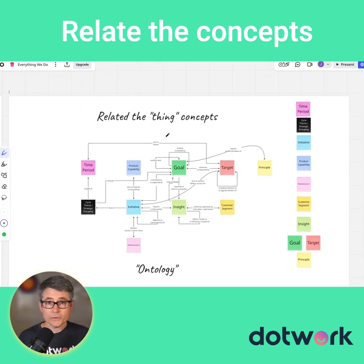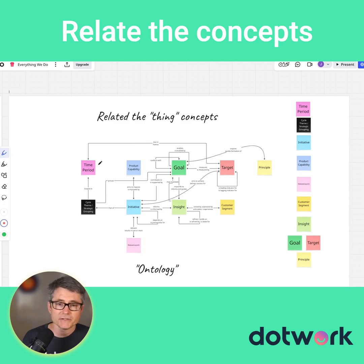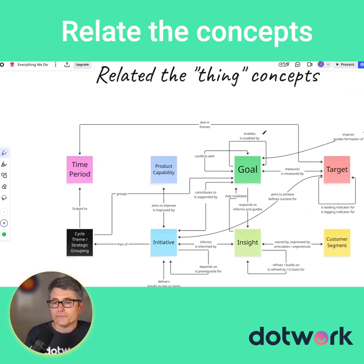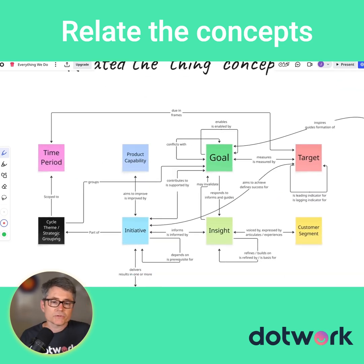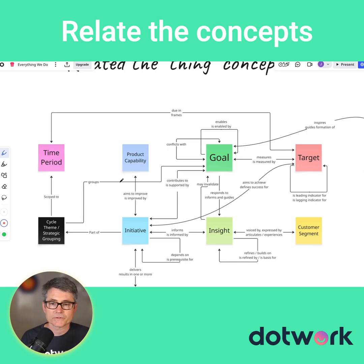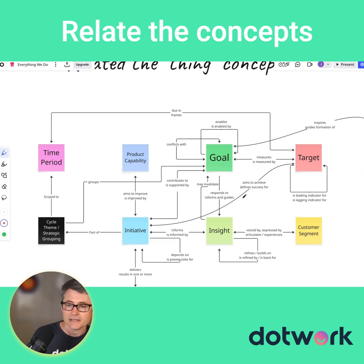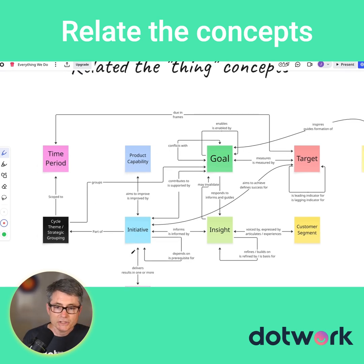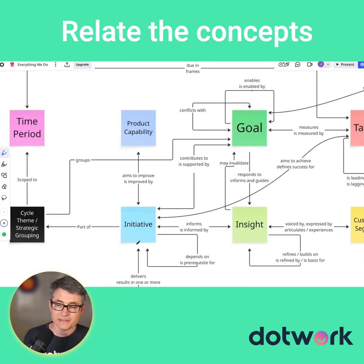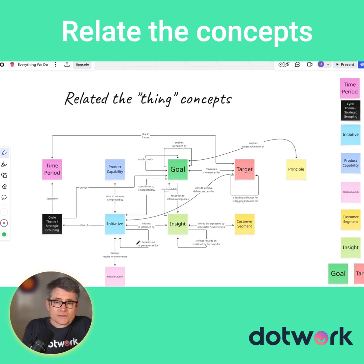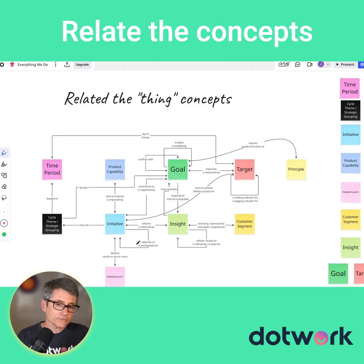Finally, we take that and think about how those concepts are related. This is called an ontology. So for example, time period frames targets; cycle themes or strategic groupings are scoped to time periods; cycles group goals. Goals respond to and inform, guide insights, initiatives, inform insights, etc. So this is a fast way that we go from a narrative into something we can convert into our tool that people can use.